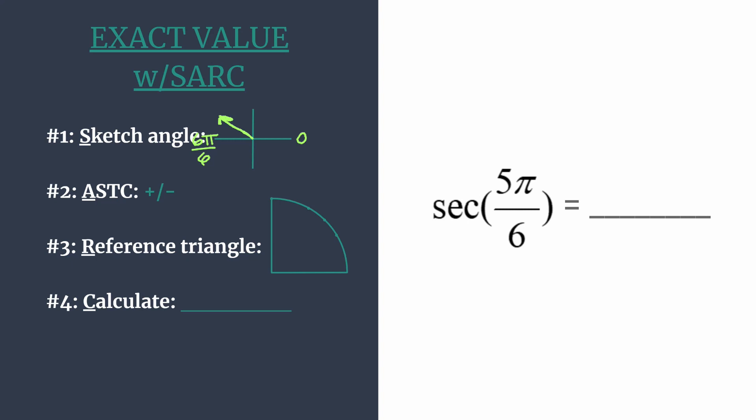Now that we know that, we're ready for step 2. Think ASTC, or a phrase that could help is, all students take classes. This tells you which trig functions are positive in each quadrant. Work your way around labeling starting in quadrant 1: A, S, T, C.